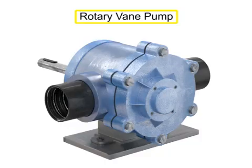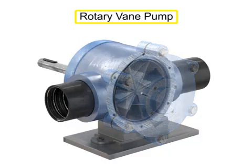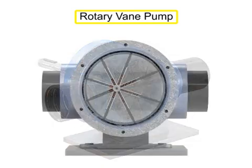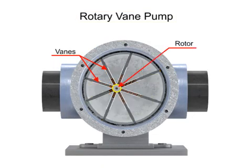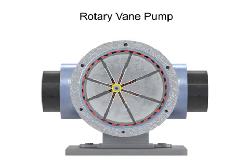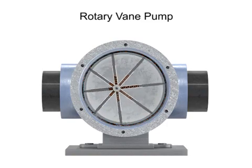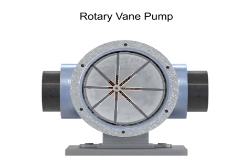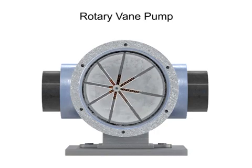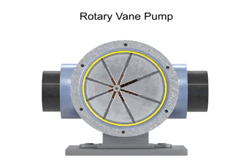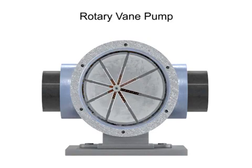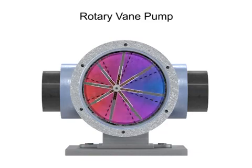A rotary vane pump is a positive displacement pump that consists of vanes mounted to a rotor. The vanes are on an off-center drive shaft. As the shaft rotates, the variable length vanes slide in and out to maintain contact with the pump housing. The tension in the vanes is maintained by either springs or hydraulic pressure. As the vanes rotate, they create chambers of varying sizes within the pump.